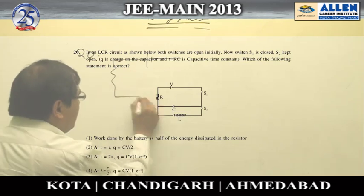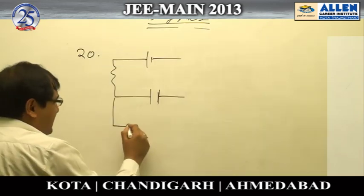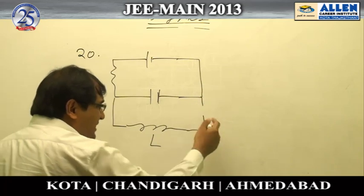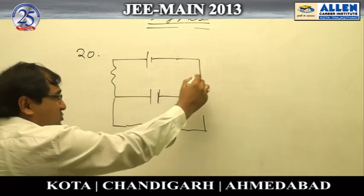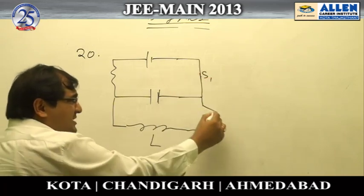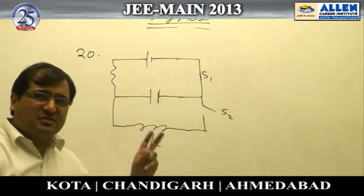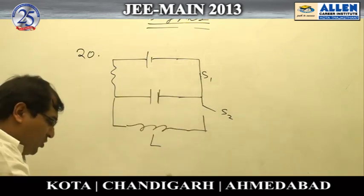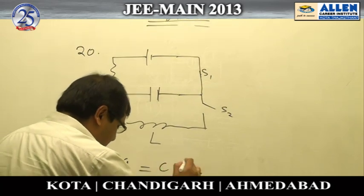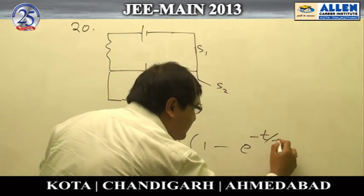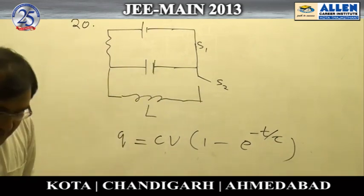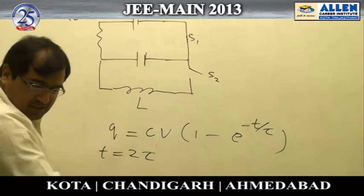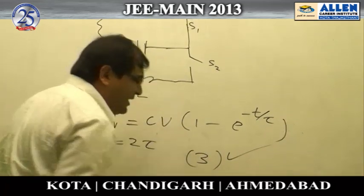Question number 20 has a battery, a resistor, a capacitor, and an inductor. But reading the question carefully, switch S2 is kept open and S1 is closed. With S2 open, the inductor is not involved at all — it becomes a simple RC circuit. In an RC circuit, charge varies as Q = CV(1 − e^(−t/τ)). Substituting t = 2τ, the correct answer is option number 3.